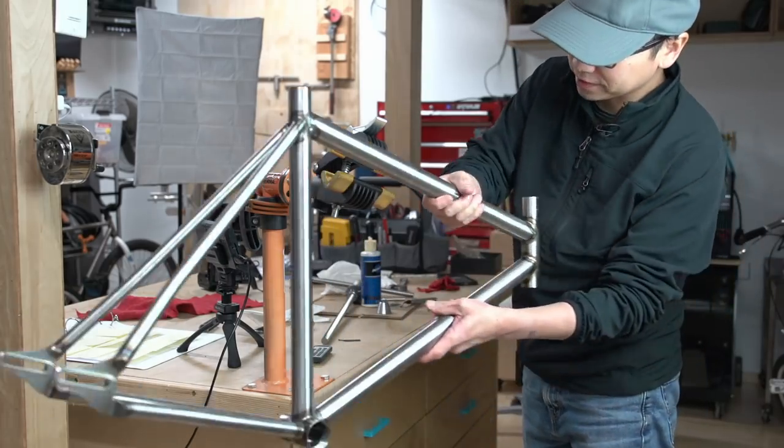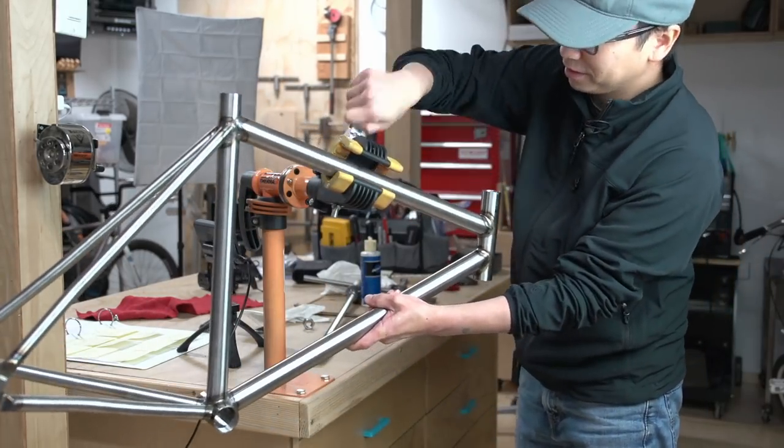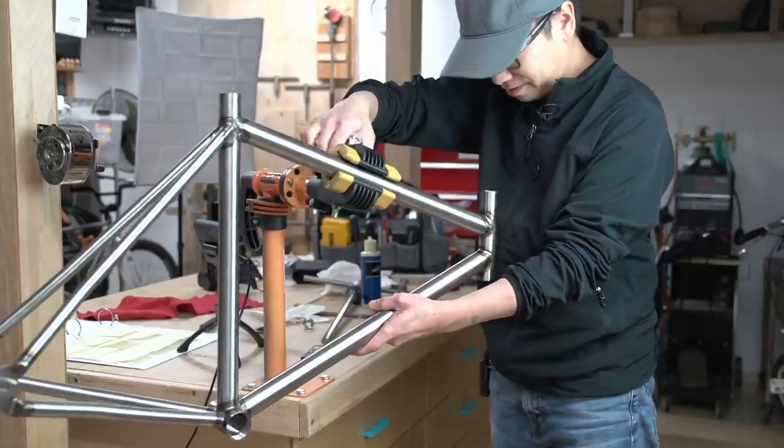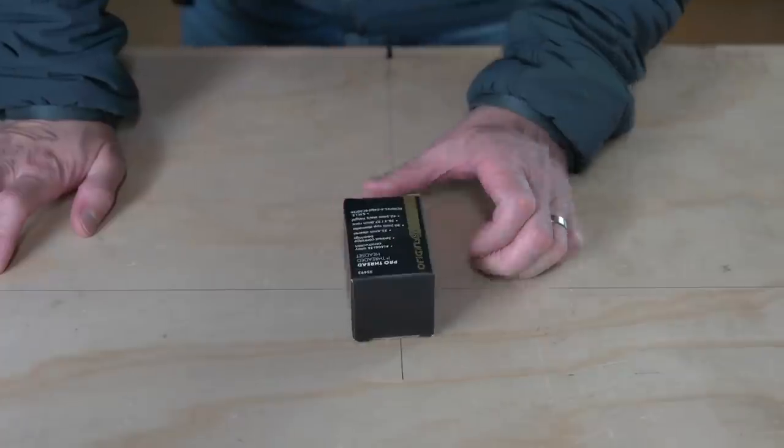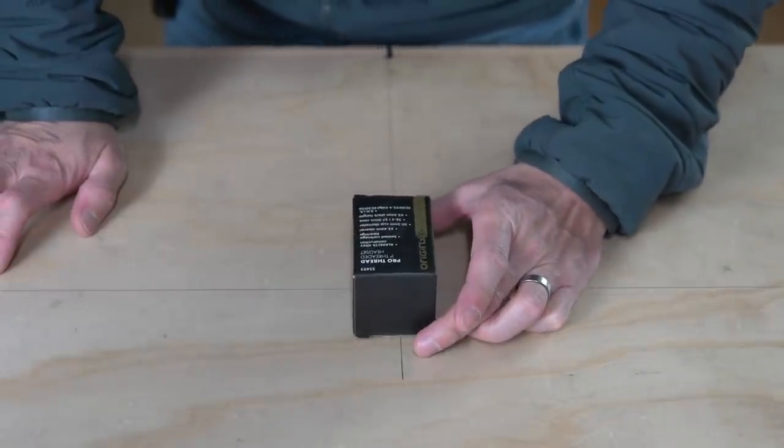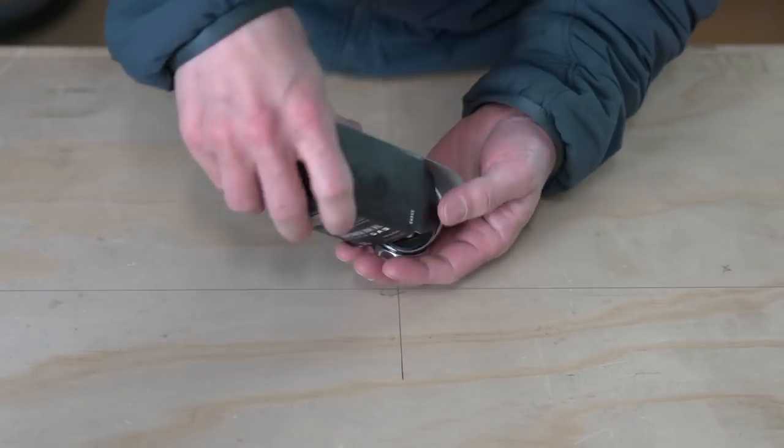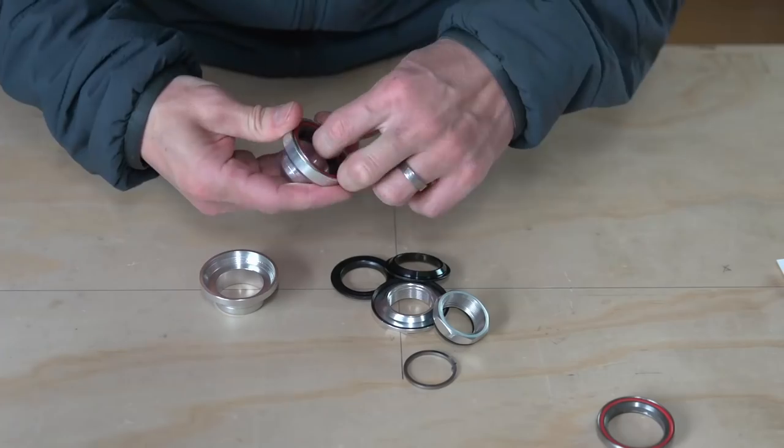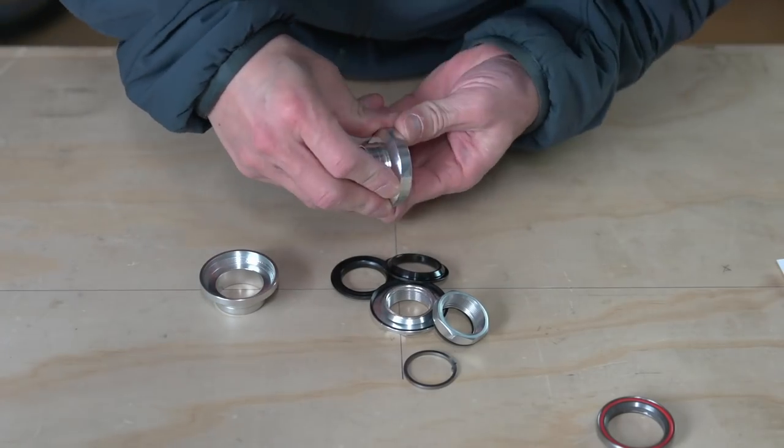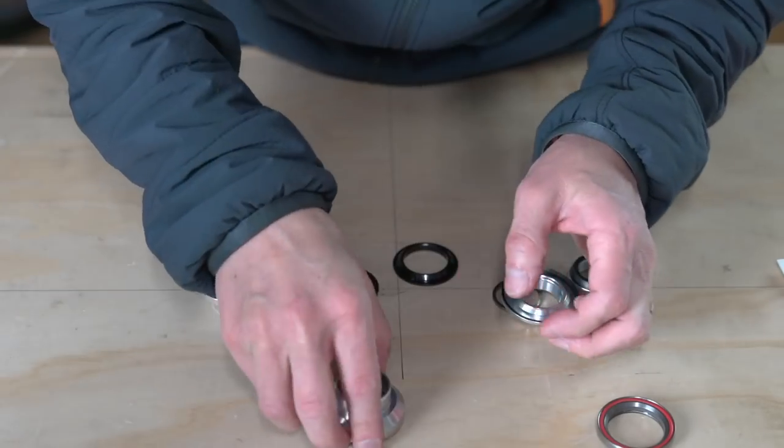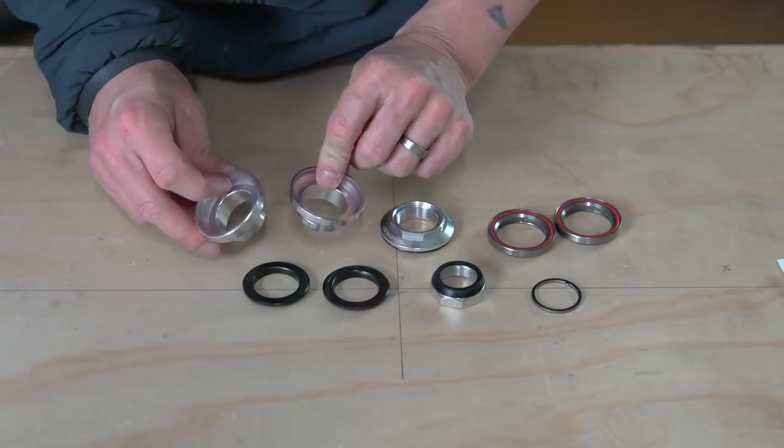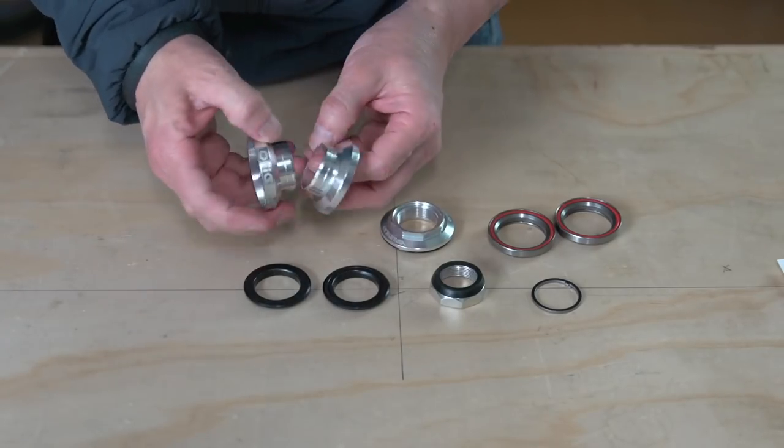I don't know why I took it off the stand because I don't need it off the stand to press cups. Origin 8 Pro Thread 1-inch Threaded Headset. These are the cups that need to be pressed on.